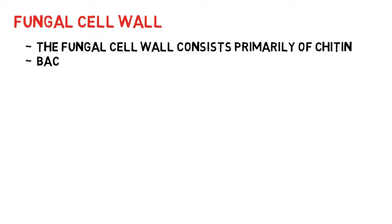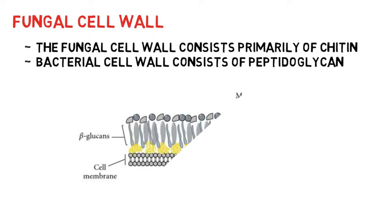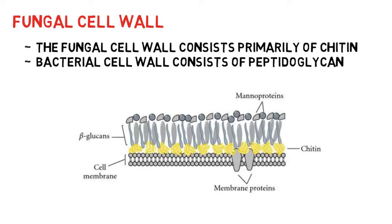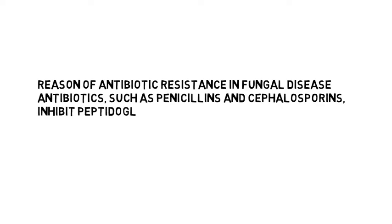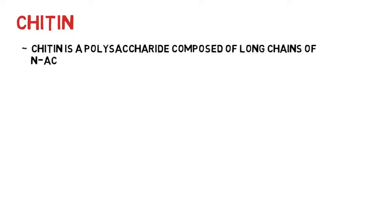The fungal cell wall consists of chitin, which makes it differ from that of the bacterial cell wall, which contains peptidoglycan. The reason why most antibiotics are ineffective against fungal disease is because of their mode of action — that is, the inhibition of peptidoglycan synthesis. Chitin is a polysaccharide composed of long chains of N-acetylglucosamine.